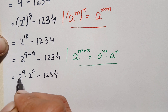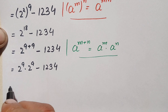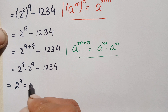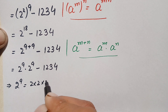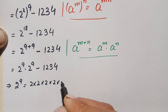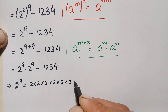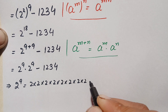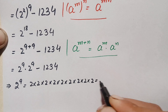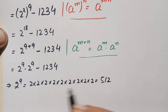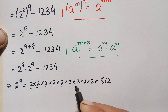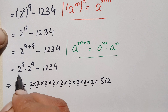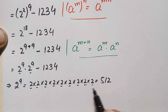Now we try to find the value of 2 raised to power 9. It is very simple — we multiply 2 nine times: 2 times 2 is 4, times 2 is 8, times 2 is 16, times 2 is 32, times 2 is 64, times 2 is 128, times 2 is 256, times 2 is 512. By multiplying 2 nine times, we get 512.